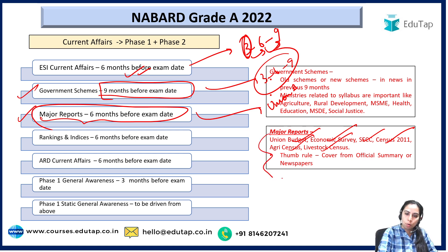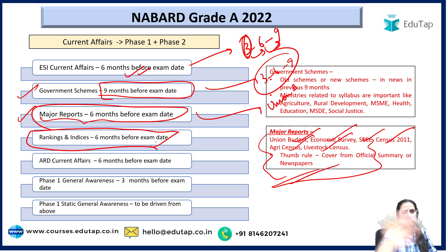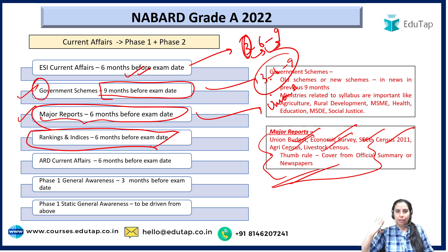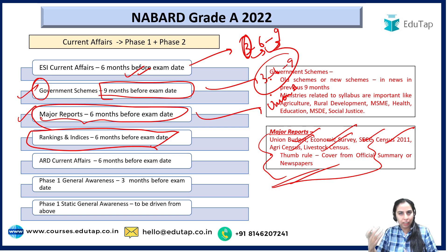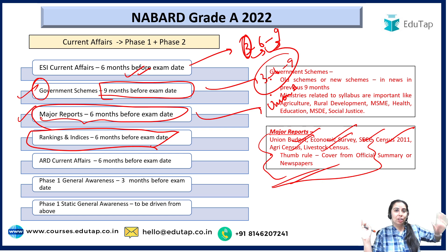Cover these reports from official summaries or any newspaper. Rankings and indices released up to 6 months before the examination should also be covered — again, the 369 rule applies. The exception to 369 is only for government schemes, where I suggest going for 9 months. For all others, 369 is the rule. For ARD current affairs — the agri current affairs — we have provided a magazine in our course. If you don't have it, you can tune in to the YouTube lectures on ARD current affairs being conducted by Iktamam; they are quite helpful.